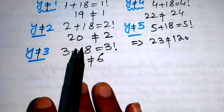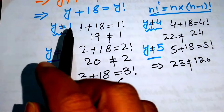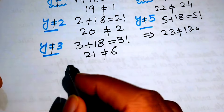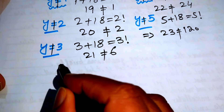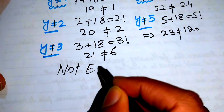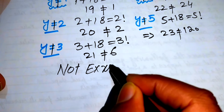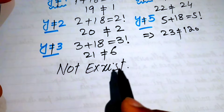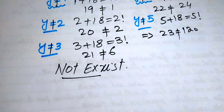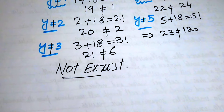We conclude that we cannot find any integer value of y that satisfies this equation. Therefore, there does not exist an integer solution to this problem, and we cannot find a value of n. Thank you so much for watching this video. Please subscribe to my channel for more exciting videos.